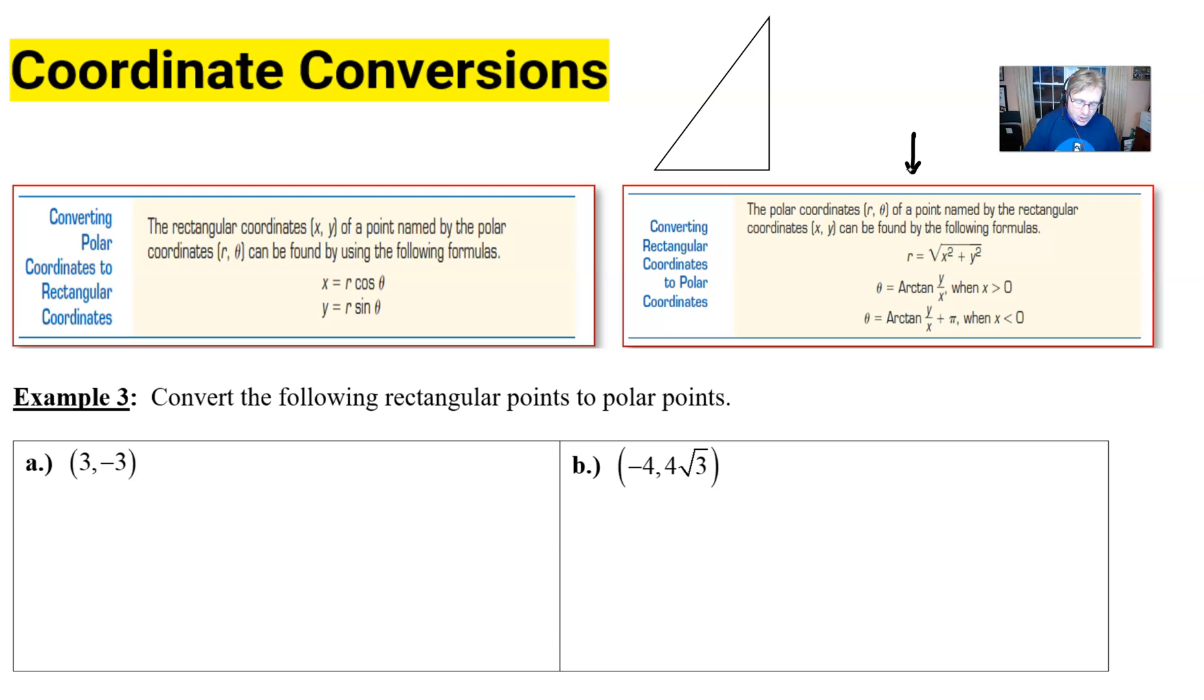It says the polar coordinate r comma theta of a point named by the rectangular coordinates x, y can be found by the following formulas. Now the fact that r is the square root of x squared plus y squared should not be very difficult to see, because if you have a standard right triangle here, the Pythagorean theorem is going to dictate that r would indeed be the square root of x squared plus y squared. So that part makes sense.